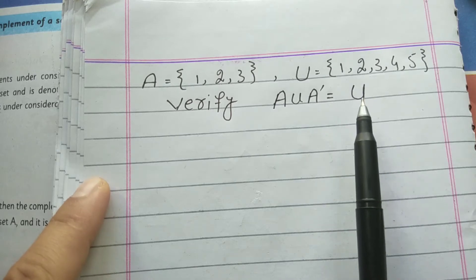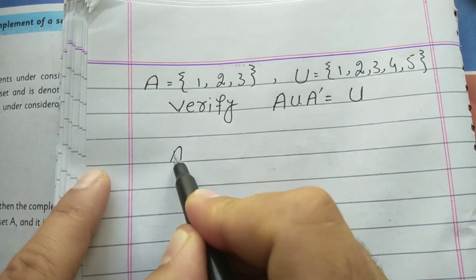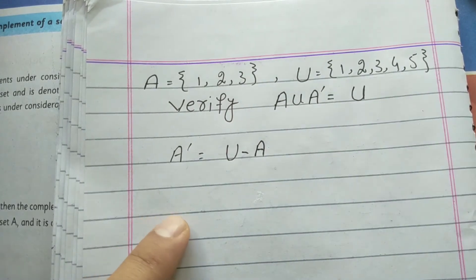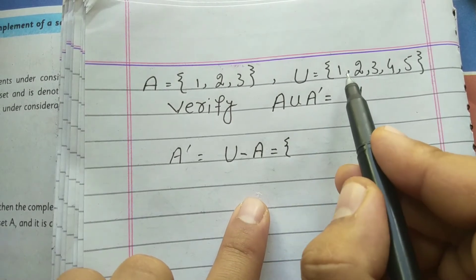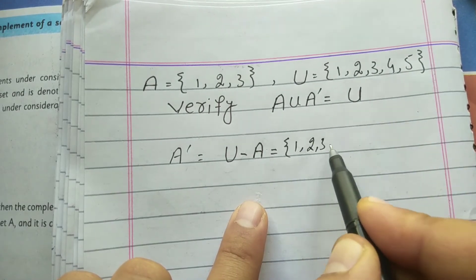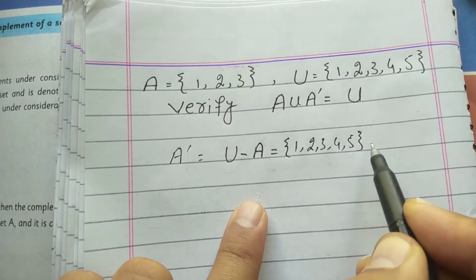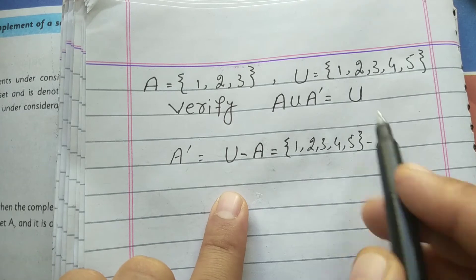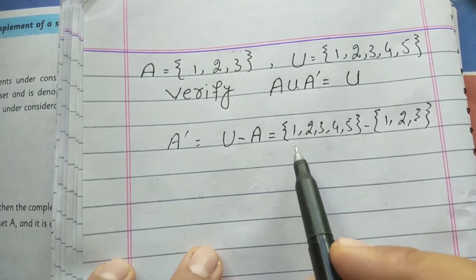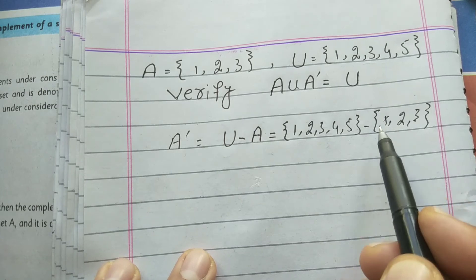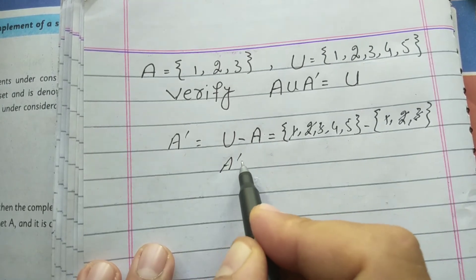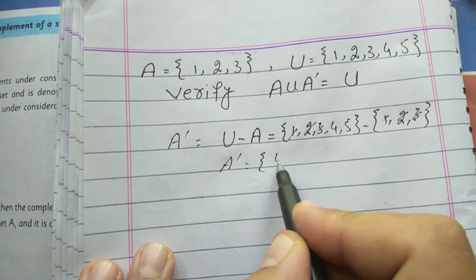First of all, we will find A complement. A complement equals the universal set subtract set A. We write the terms of the universal set: 1, 2, 3, 4, and 5, then subtract A: 1, 2, and 3. So 1 cancels with 1, 2 cancels with 2, and 3 cancels with 3. Therefore, A complement equals {4, 5}.